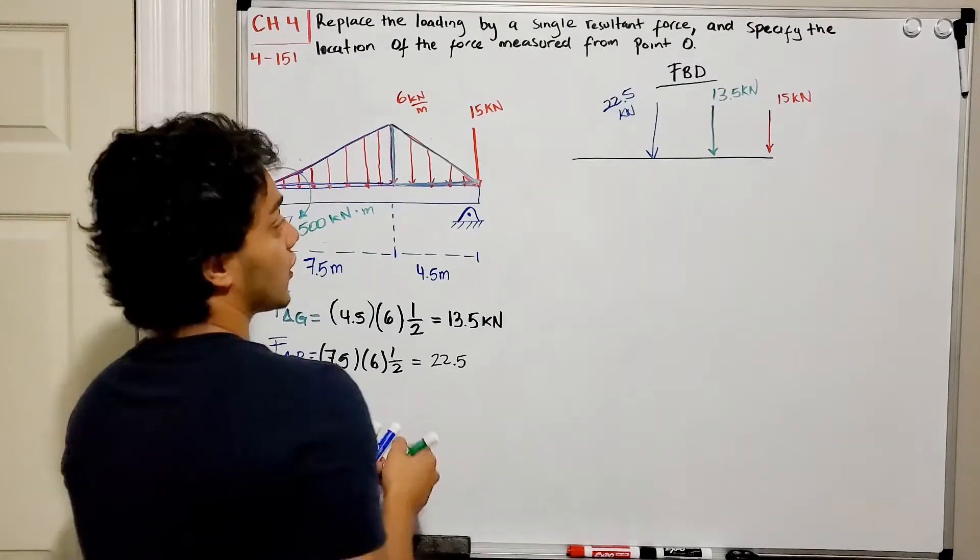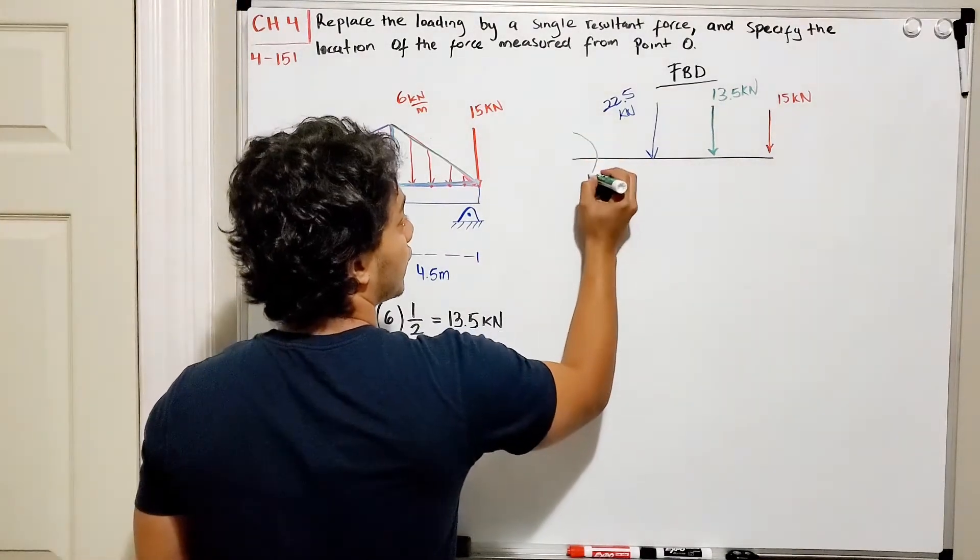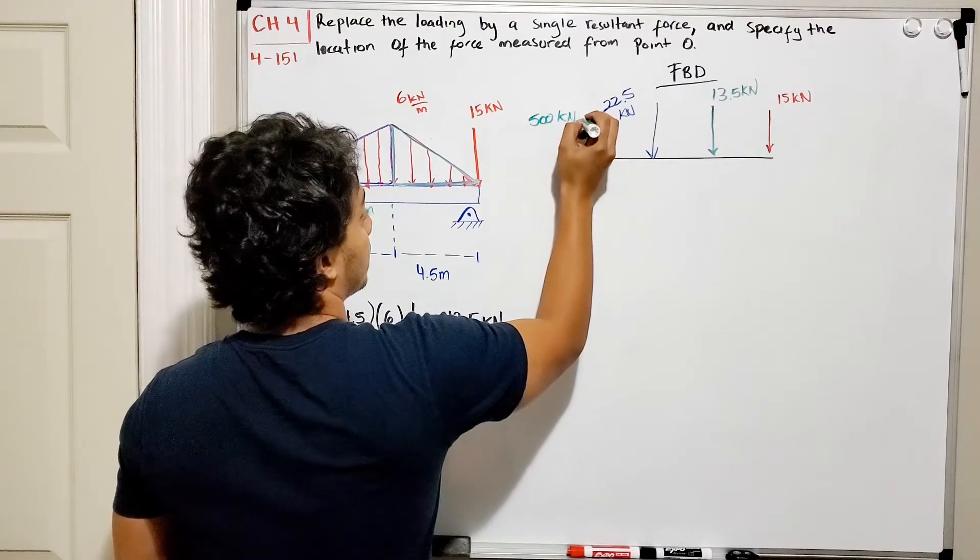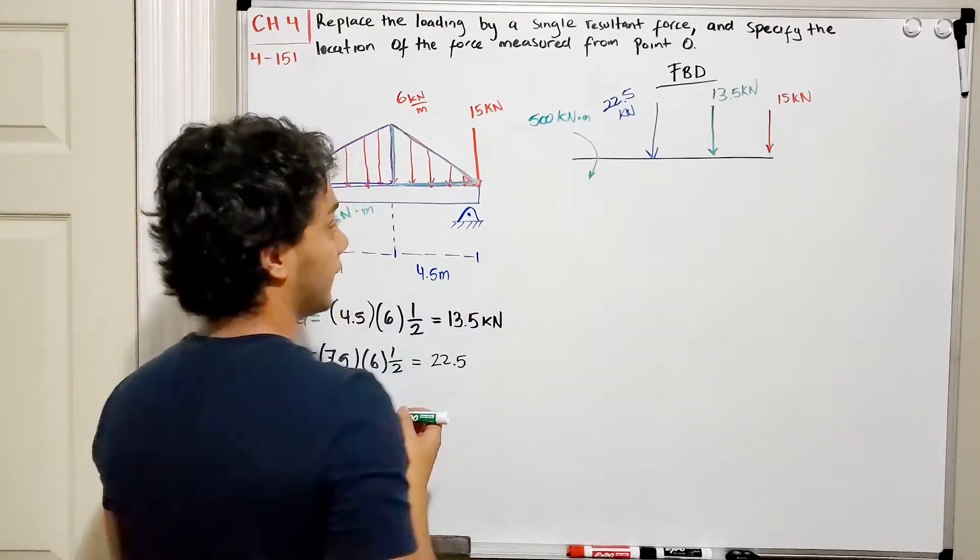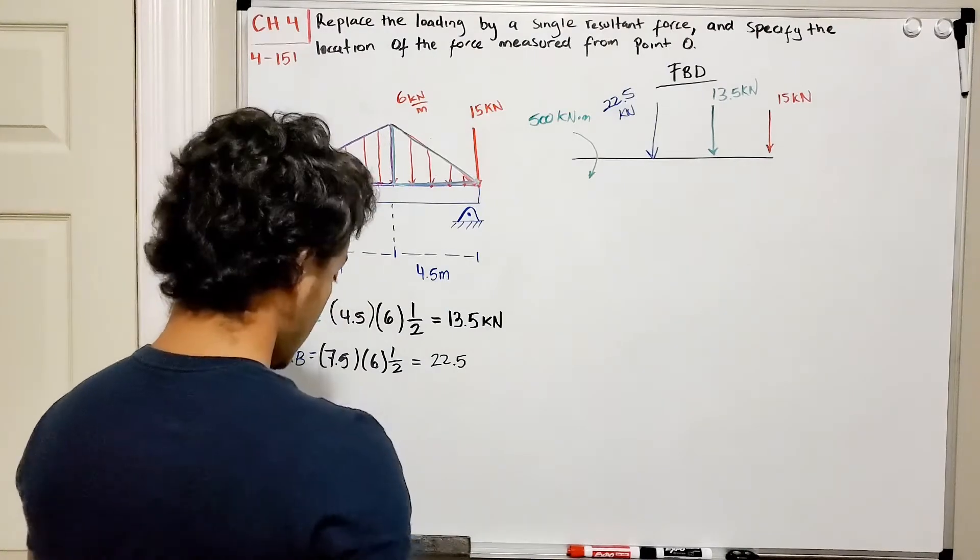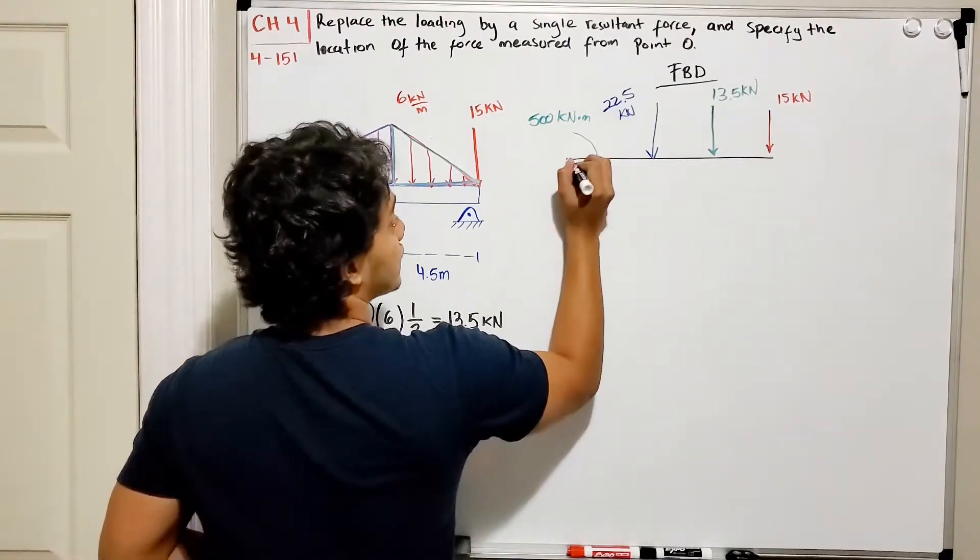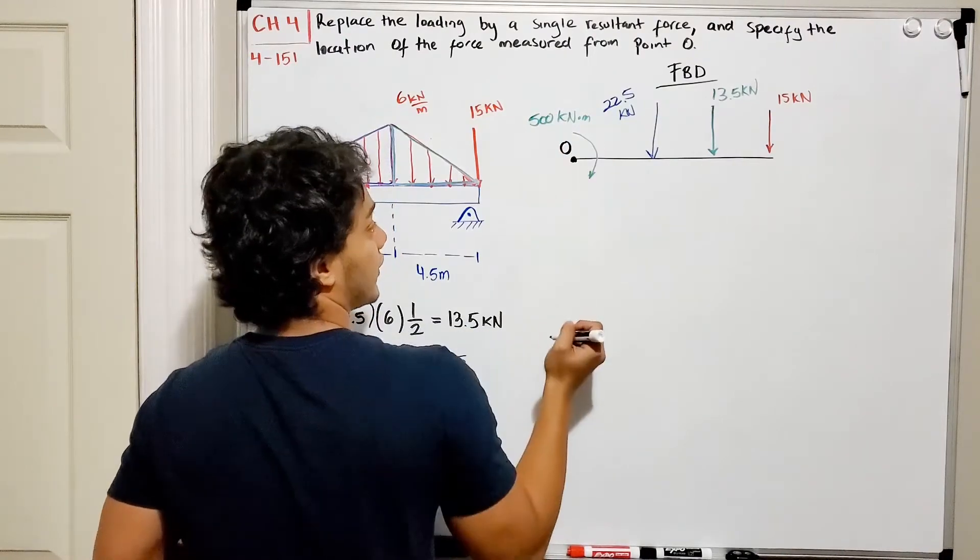Now what else do I have? I also have this moment about my point O that is equal to 500 kN·m.